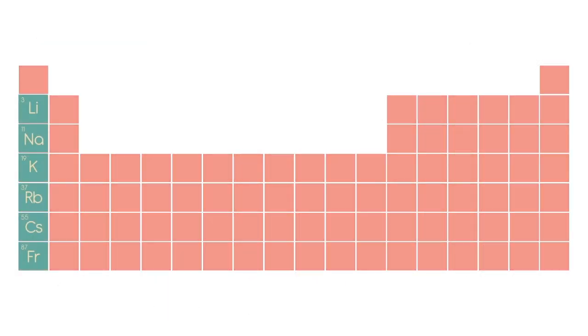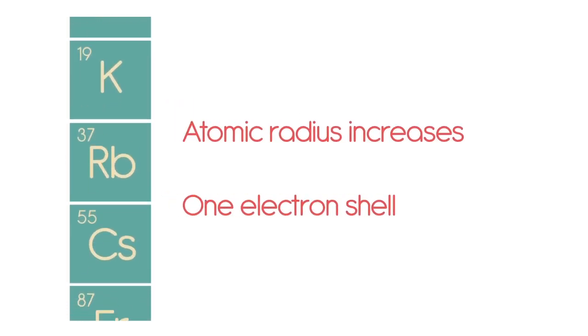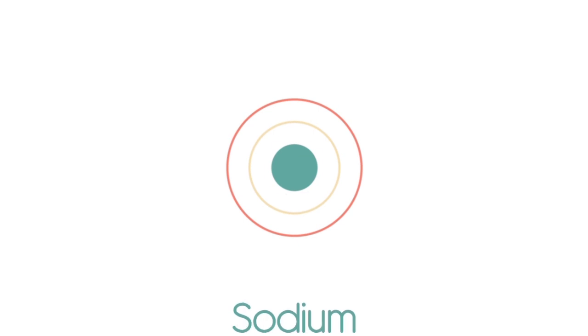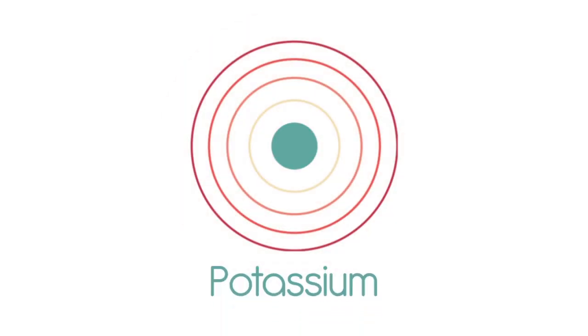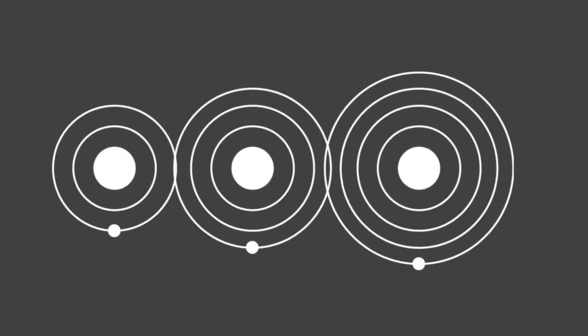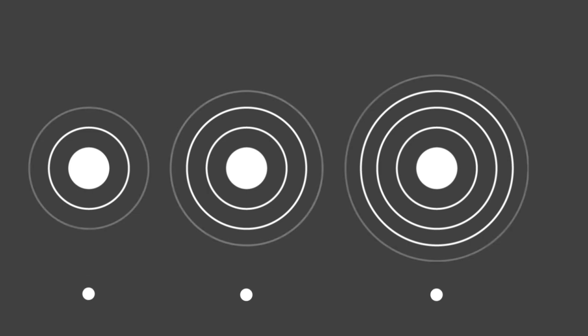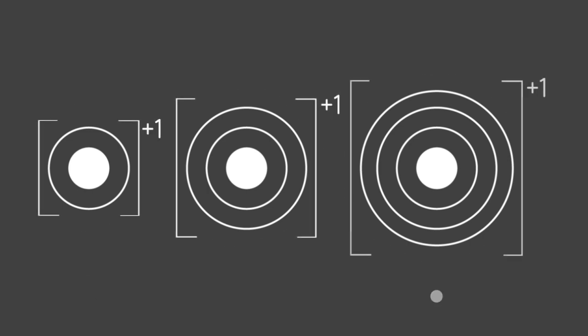Moving down group 1 of the periodic table, atomic radius increases by one electron shell. Lithium has two electron shells, sodium has three electron shells, and potassium has four electron shells. We know that these alkali metals can lose their lone electron in their valence or outermost shell to form an ion with a positive one charge.